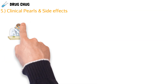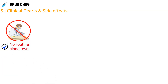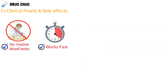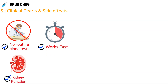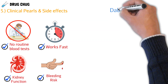Now let's talk about clinical pearls and side effects. First, there are no routine blood tests required — unlike warfarin, where you check the INR every one to four weeks, dabigatran and the other direct thrombin inhibitors don't need routine labs. Second, it works fast, directly on the activated form of thrombin, so there's no delay like we saw with warfarin. Third, kidney function plays a role in dosing — typically below a creatinine clearance of 50 mL/min is when dose adjustments are considered. And like all anticoagulants, there is a bleeding risk.